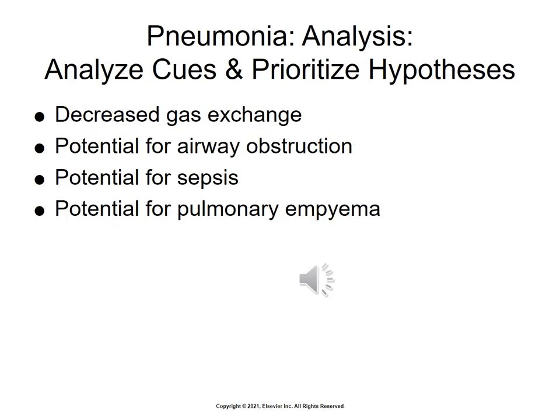Next we will discuss analyzing our cues and prioritizing hypotheses for care of our patient. Priorities will be addressing decreased gas exchange due to decreased diffusion at the alveolar capillary membrane. There is potential for airway obstruction due to inflammation with excessive pulmonary secretions and muscle weakness, as well as the complication of sepsis due to microorganism involvement in the bloodstream and the potential for spread of infectious organisms from the lung into the pleural space.